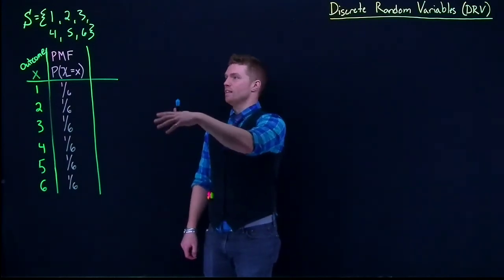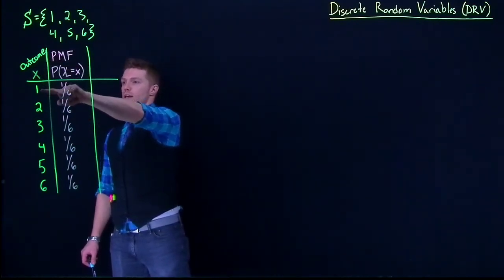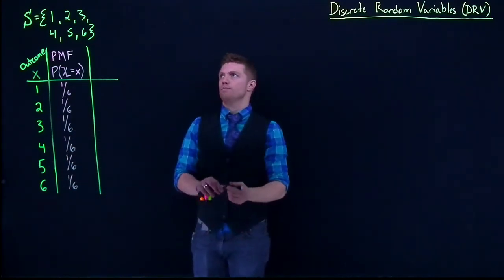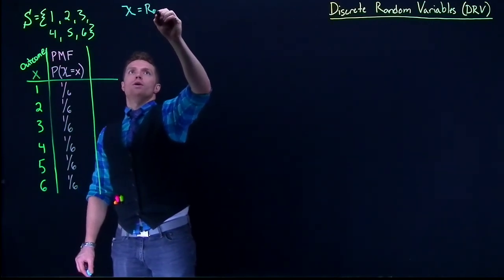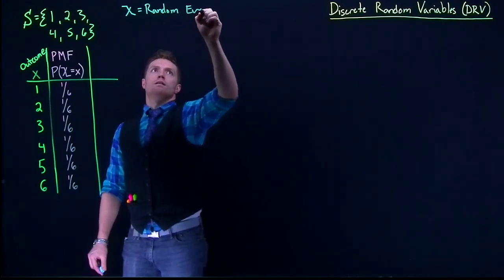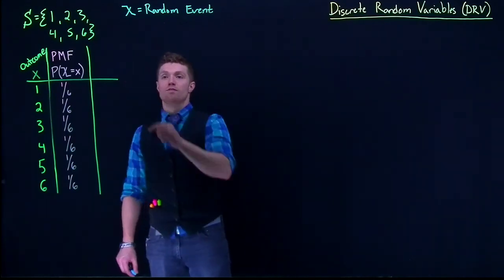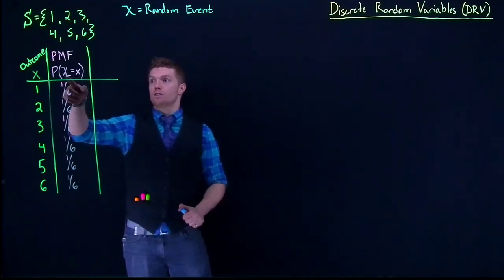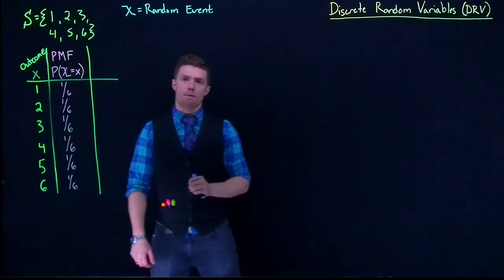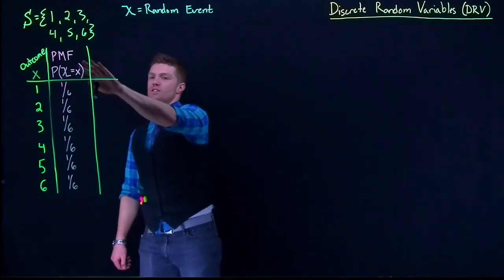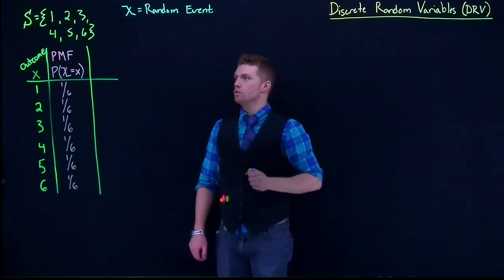So that is the idea of this probability table, where x represents our possible outcomes and capital X is our random event. For this scenario, our random event is our dice roll — capital X is the dice roll, and little x is all of our possible outcomes. Up here I've written the PMF, which stands for probability mass function, and this probability statement is the definition of that probability mass function, with all of the possible values for those probabilities.